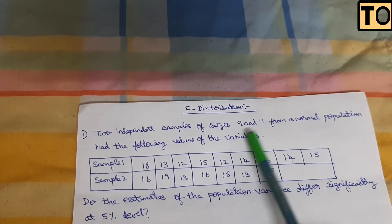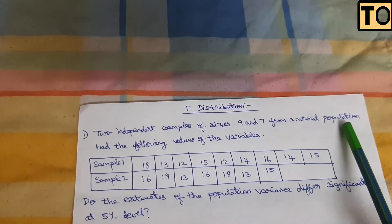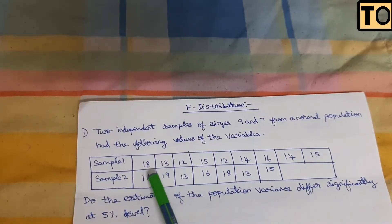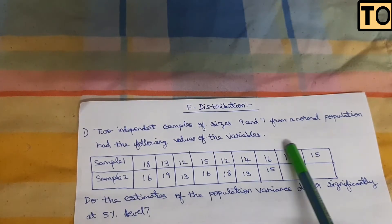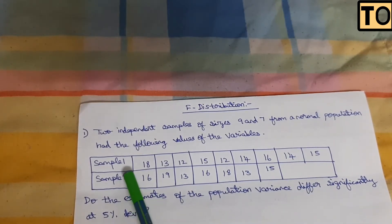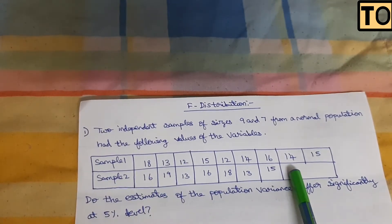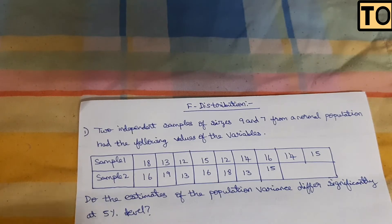If you look at the sizes, you have n1 and n2 values. From a normal population, you have a total of nine values and seven values.